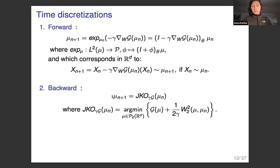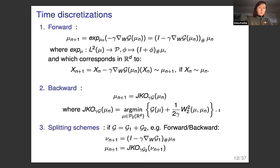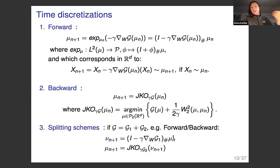A second discretization is an implicit one — the analog of a proximal scheme in Wasserstein space. Here mu_{n+1} is the JKO step: the minimizer of your functional G plus a Wasserstein-2 penalization term between mu and the previous iterate mu_n. This is the minimizing movement scheme. Finally, if your functional G is a sum of several functionals, you can think of splitting schemes such as the forward-backward scheme, where you apply a forward discretization for the first term and a backward discretization for the second term, decomposing the iterate mu_{n+1} into two steps.